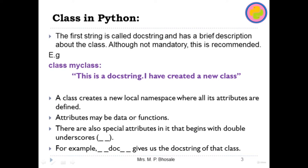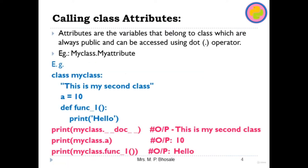There are some special attributes that begin with double underscore and end with double underscore. For example, if you want to display the doc string, you can use the class name dot double-underscore doc double-underscore, which will print the doc string of the class.